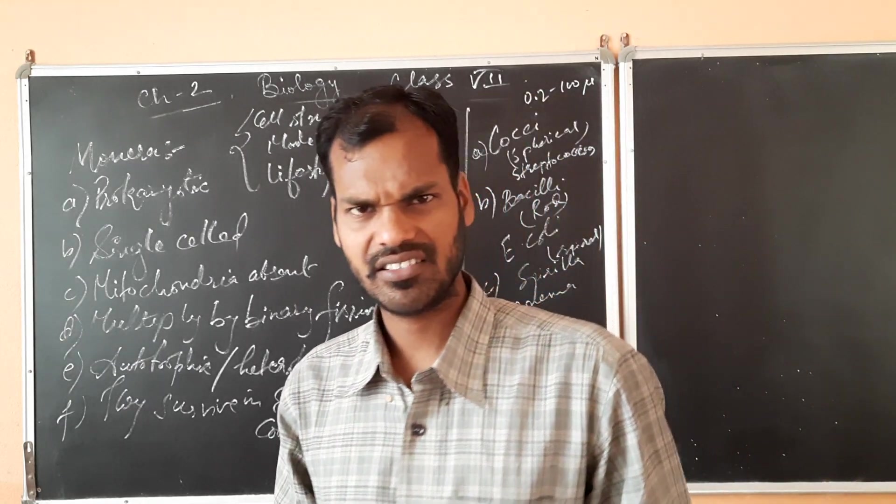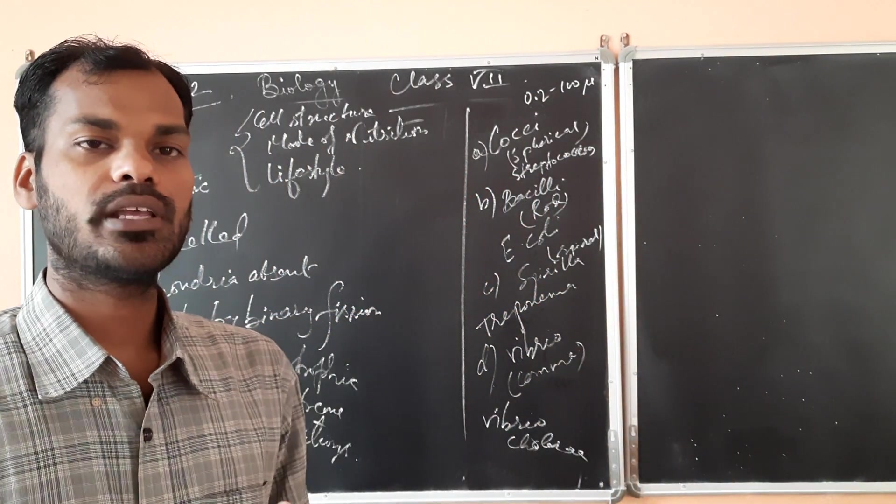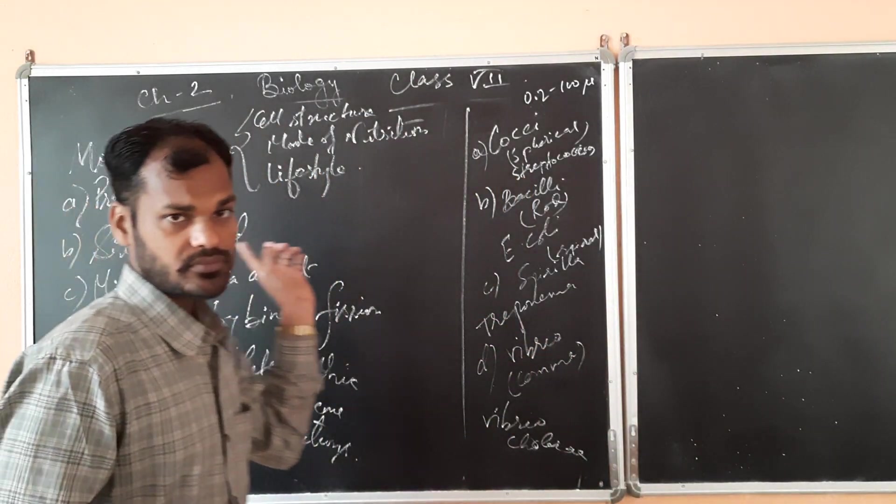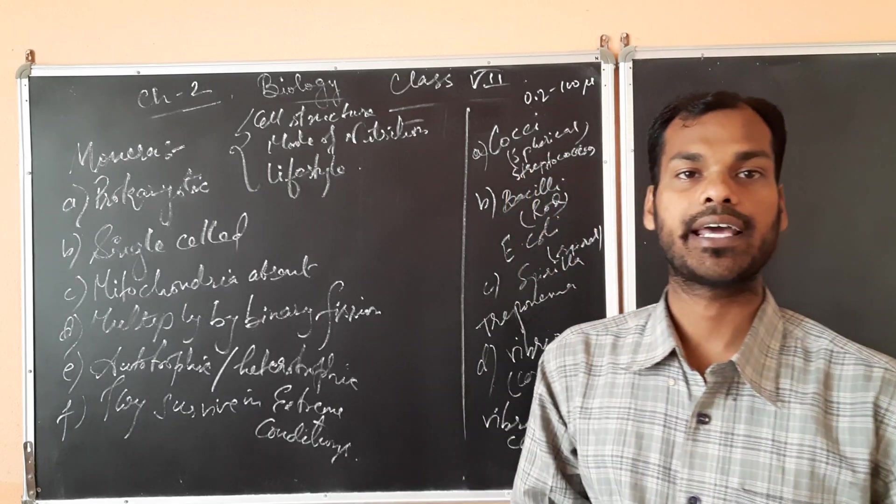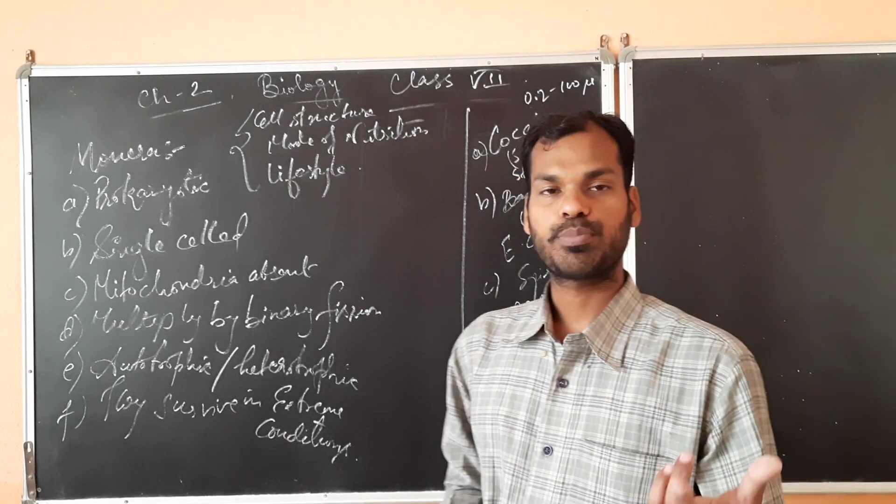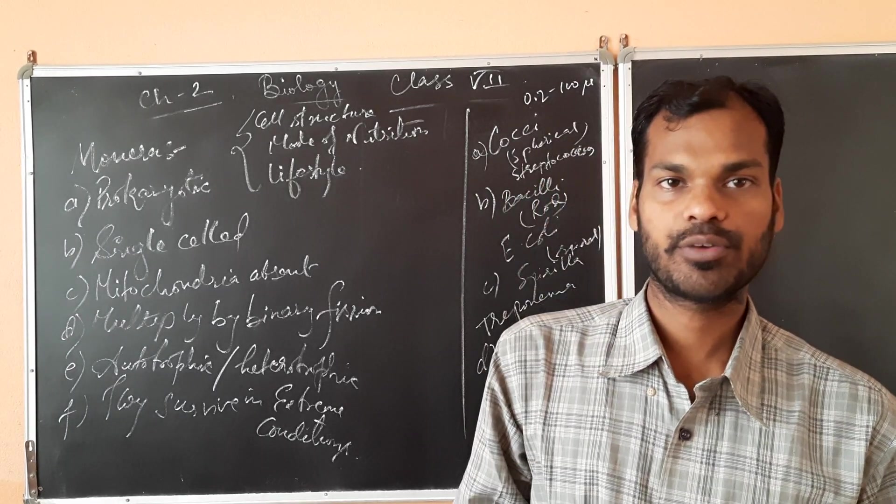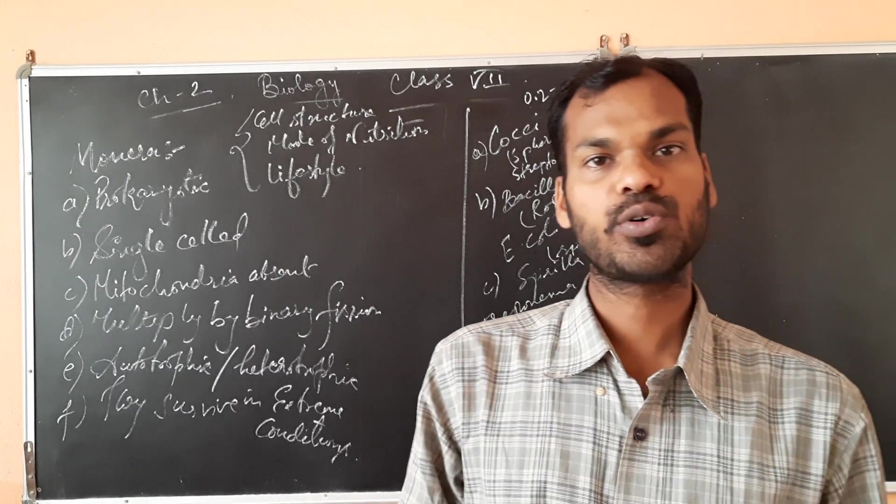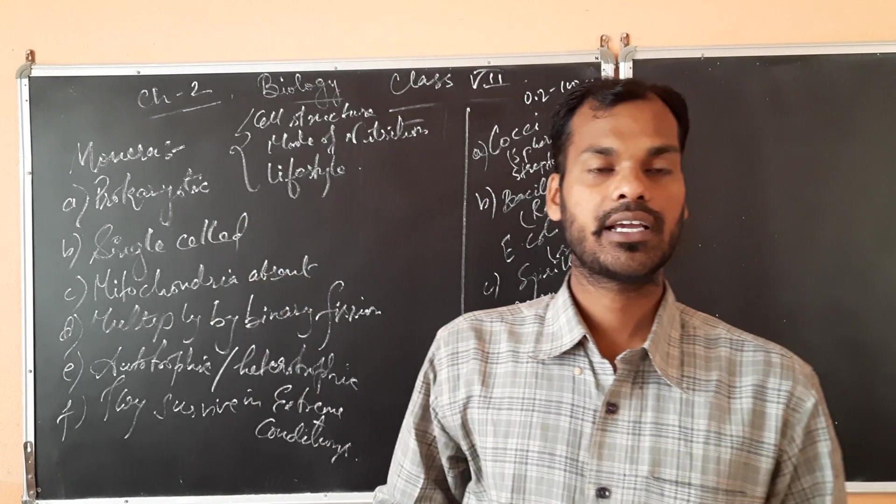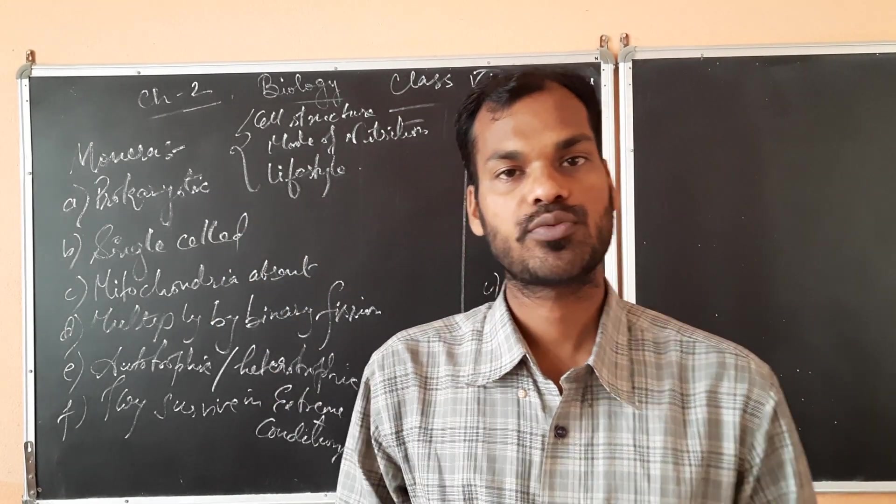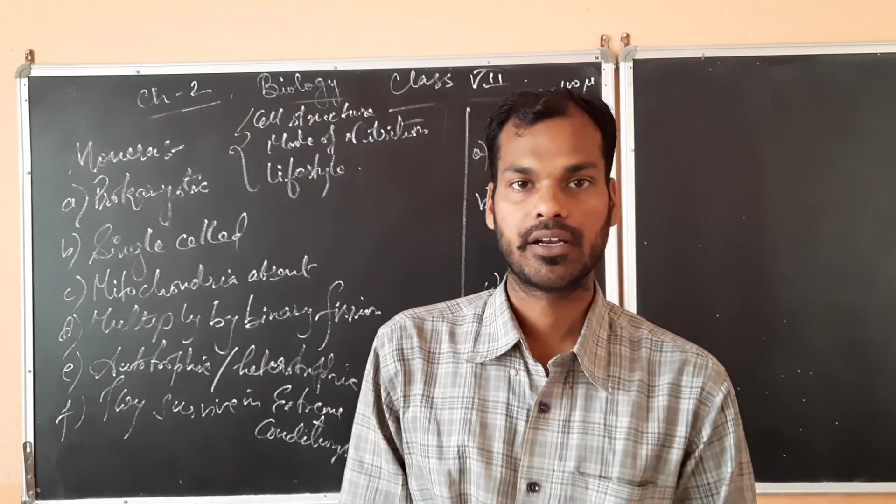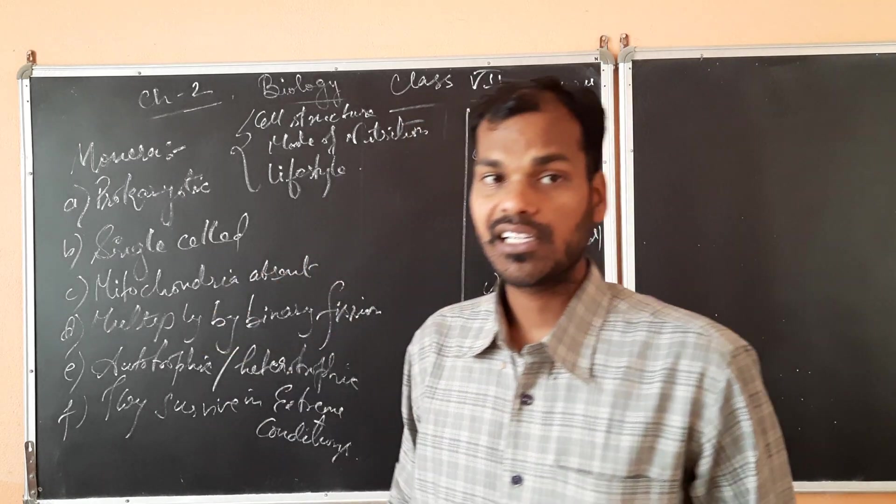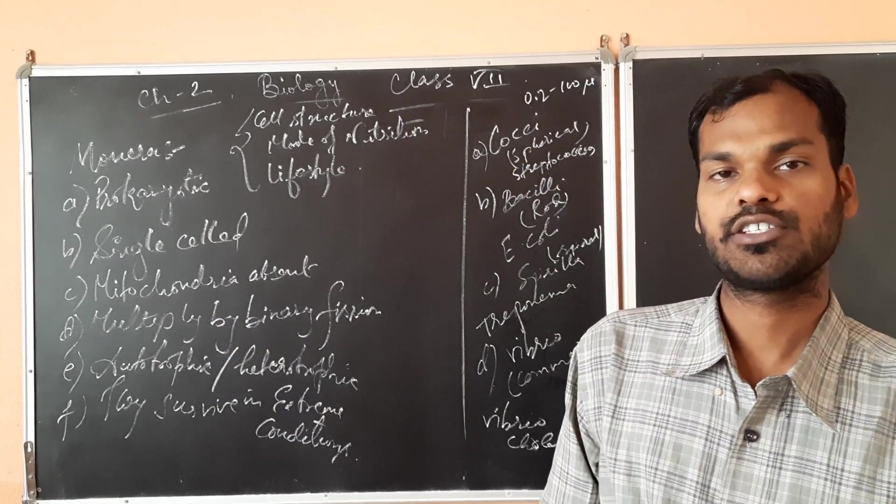Now we will come to the first group that is called Monera. These are the simplest organisms and especially all the bacteria belong to this group. The first characteristic is it is prokaryotic, means 'pro' means primitive or old and 'karyon' means nucleus. Means those organisms which are having the primitive nucleus that were called prokaryotic. The nucleus will not be surrounded by nuclear membrane. Next is single cell, so the cell will be single only, so there is no way it can form tissues.